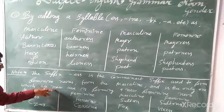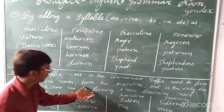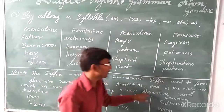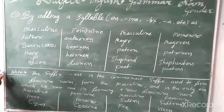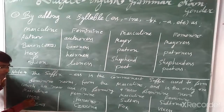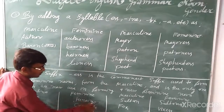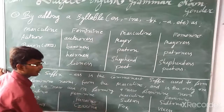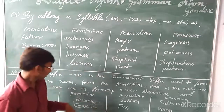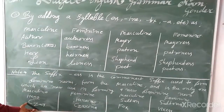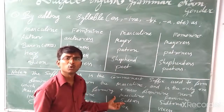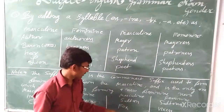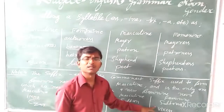For example, the masculine noun 'hero' becomes 'heroine'. 'Lion' becomes 'lioness'. 'Mayor' becomes 'mayoress'. 'Peer' becomes 'peeress'. 'Patron' becomes 'patroness'. 'Safer' becomes 'saferess'. 'Poet' becomes 'poetess'. In this way we have formed the feminine gender by adding the suffix '-ess'.